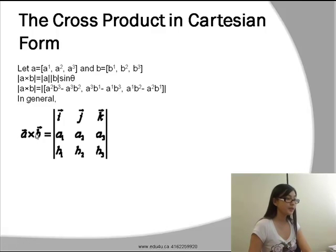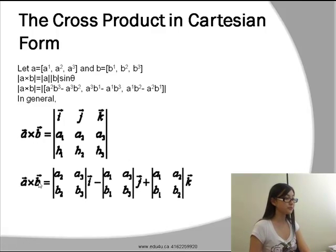In general, A cross B will have a certain formula. A cross B will be equal to A2 times B3 minus A3 times B2 times the unit vector for the x-axis minus A1 times B3 minus A3 times B1 times the unit vector for the y-axis plus A1 times B2 minus A2 times B1 times the unit vector for the z-axis.